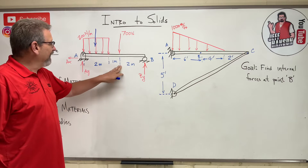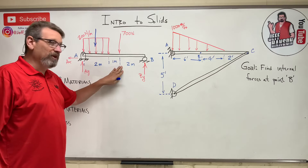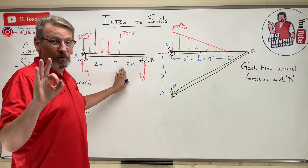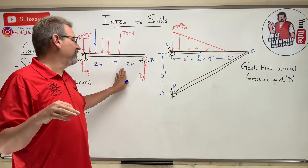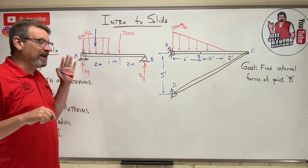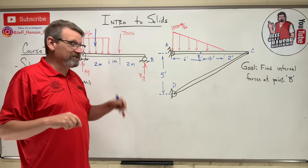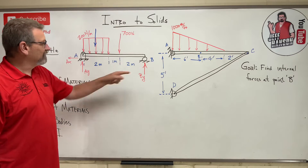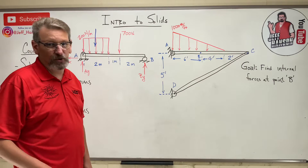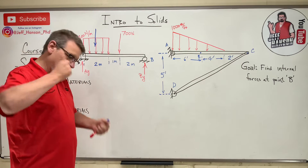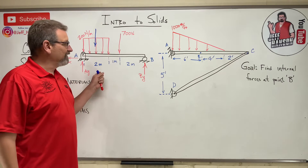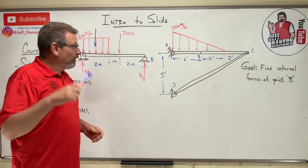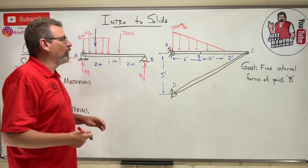If you're weak at Statics or just barely passed it, it would pay you dividends to go back to my Statics series on YouTube and review those videos for a better foundation. If you're going to struggle on the global equilibrium portion, this class is going to punch you in the face. Finding reactions should take about two minutes — you ought to know it cold. If you're still confused about cosine versus sine, get prepared.